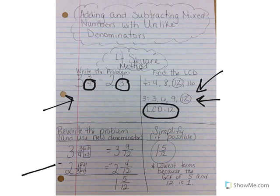The next step is to rewrite the problem and use our new denominator. So we rewrite 3 and 3 fourths and 2 and 1 third. Then we come over here and we put the new denominator of 12. We also bring our whole numbers over and the subtraction sign in this case over. If it was addition we bring over the addition sign.